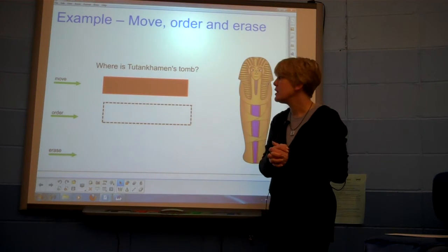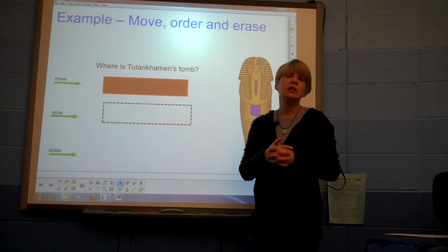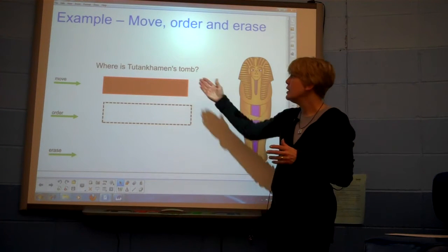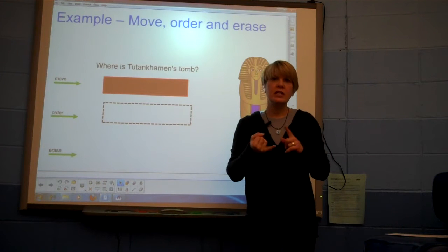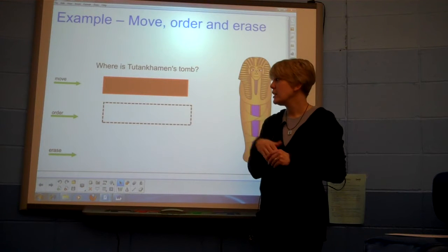The next method is shown here, order and reveal. In order and reveal, it's a little bit more complicated. Back to move and reveal, you need to type the text, create an object to cover it, and then move the object in order to reveal it.